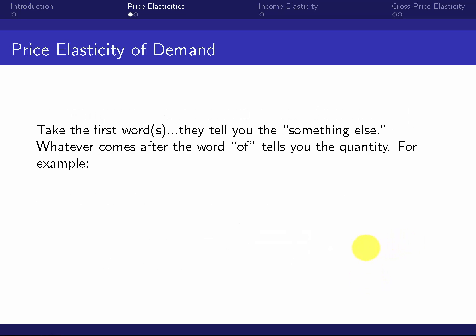So first of all, price elasticity of demand. When we break this formula down, we're going to need to know what's the quantity and what's the something else.